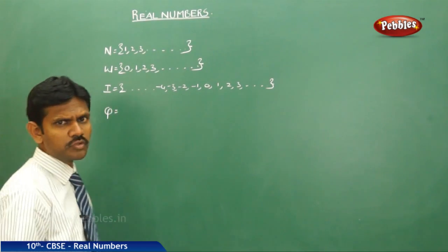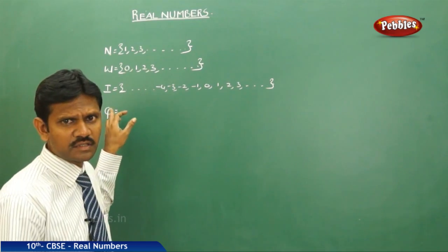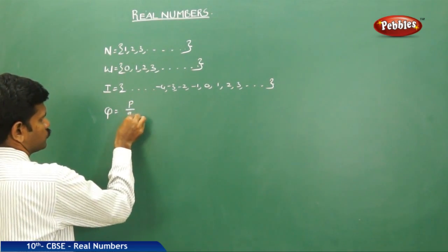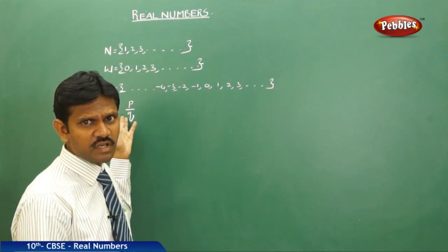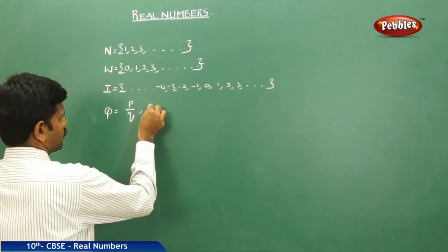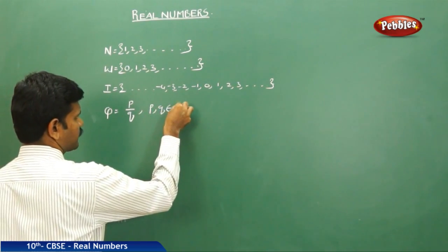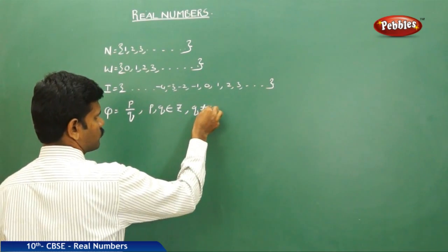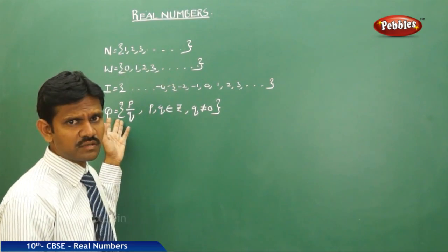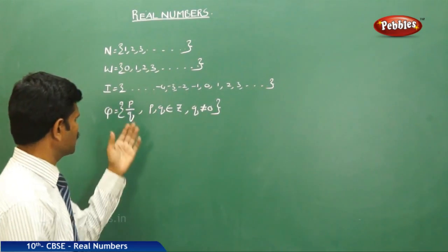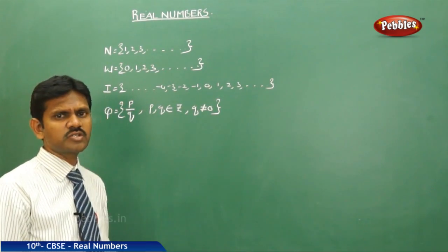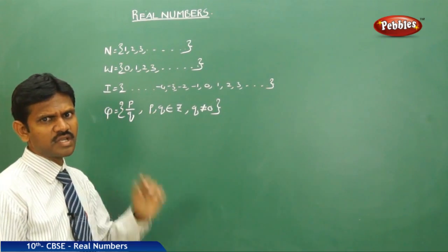Next, a rational number. How do we define a rational number? Rational numbers are denoted with the letter Q. Rational numbers are of the form P/Q — that means numbers which are in fraction form, P/Q, are called rational numbers. Here, P and Q are collected from the integers Z, and Q is not equal to 0. This is the definition of rational numbers. A number which is of the form P/Q is called a rational number.